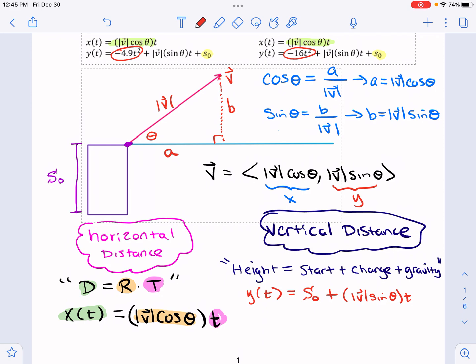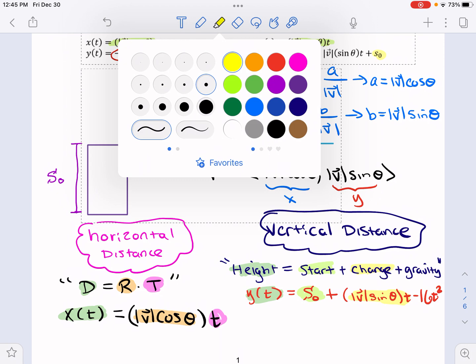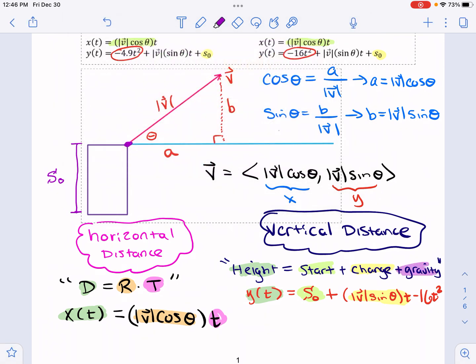So depending on whether your units are in feet or in meters, you're going to use that term there. And in a physics class, you derive sort of why that is what it is, but we're just going to use them. So let's just pretend it's in feet for now. Negative 16 T squared, right? And so, again, just matching things up. My height can be determined if I know my start and my change. And then, of course, accounting for gravity. All right, so that's why the equations look the way they do.